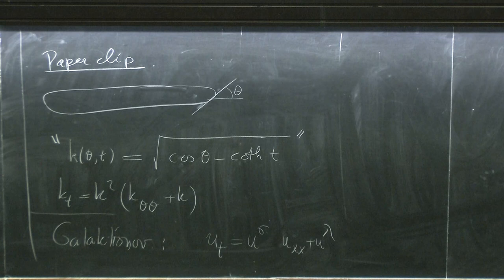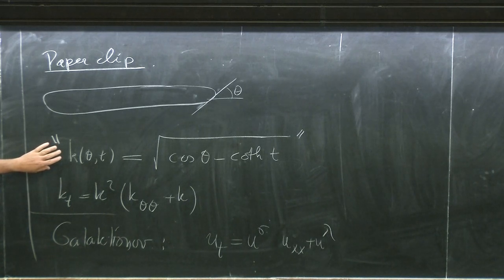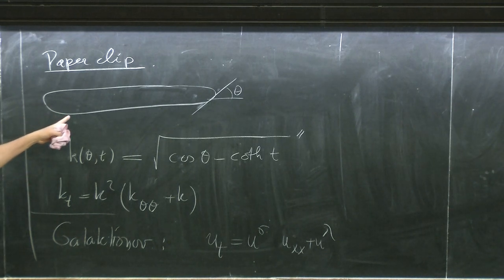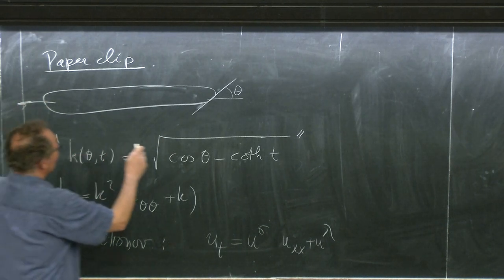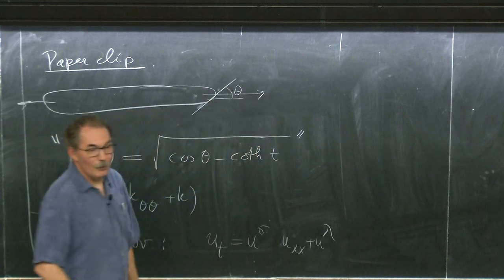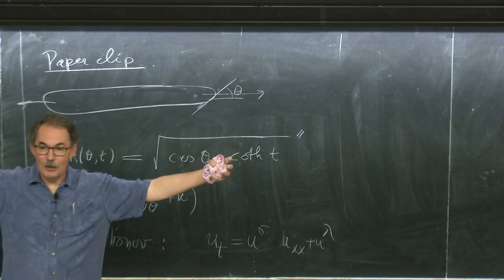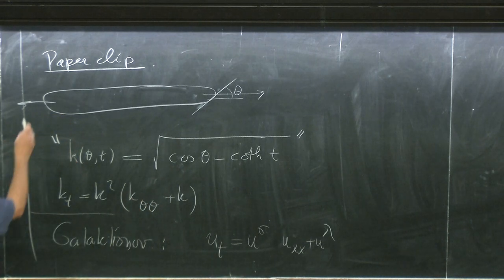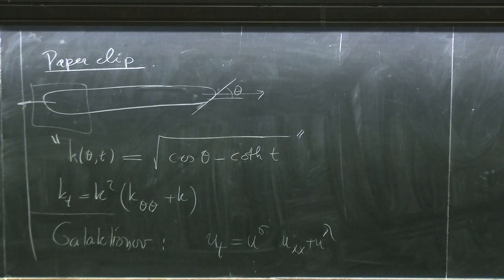If you take that formula and interpret what it looks like as a curve, it looks like a paperclip. In backward time, these two ends are moving outward; in forward time, the two ends come together and then it becomes a circle. The asymptotic shape of these ends are Grim Reapers, or Saffman-Taylor fingers, depending on which direction of time you're going.